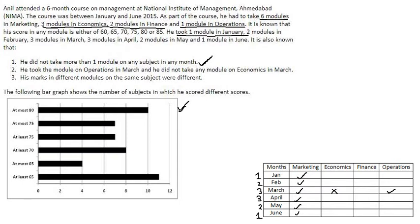In the month of January, 1 module is already completed, so there will be no additional module here. In June also, 1 module is completed so there will be no module here. Now there are 3 modules in economics and only 3 places are left, so 1 module will be in February, 1 in April and 1 in May.